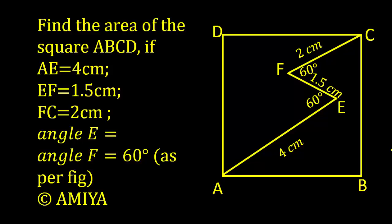Hello friends, welcome to the world of math by AMIYA. We have a question. Find the area of square ABCD if AE equals 4 cm, EF is 1.5 cm, and FC is 2 cm, where angle E and angle F are both 60 degrees. We need to find the area of square ABCD.